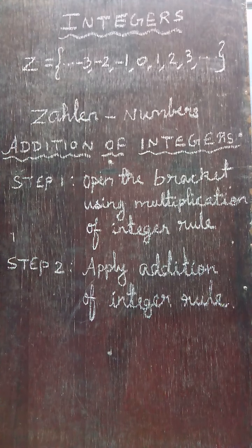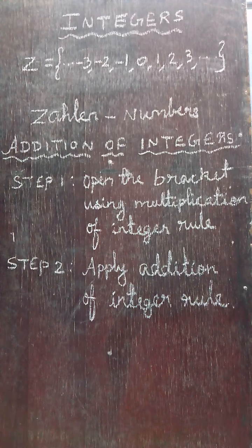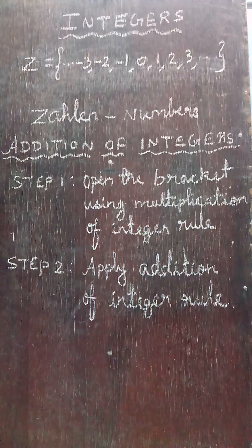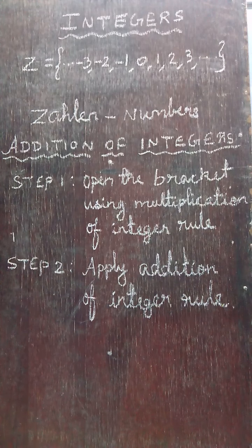In integers, we write numbers with their sign. Positive numbers carry a plus sign, and negative numbers carry a minus sign. If it is a positive number, you can write it without the sign — it is understood to be positive. But for a negative number, you must write the minus sign. Negative numbers are less than zero.